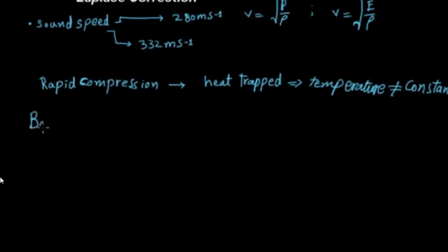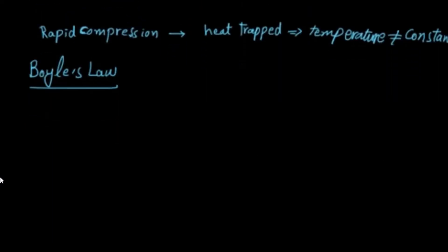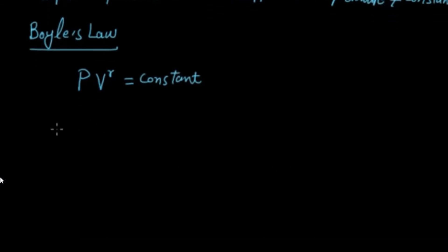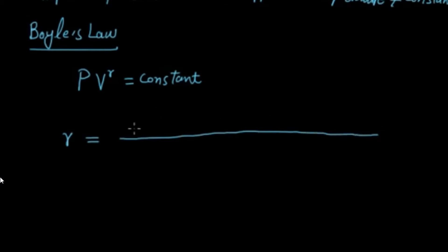So Laplace gave the expression PV^γ = constant. Laplace put a power gamma on the volume, making the whole product constant. Newton had said PV = constant. This gamma is called the ratio of molar specific heat at constant pressure over molar specific heat at constant volume.